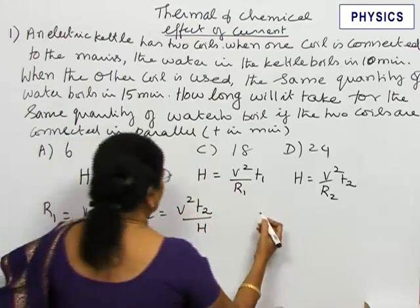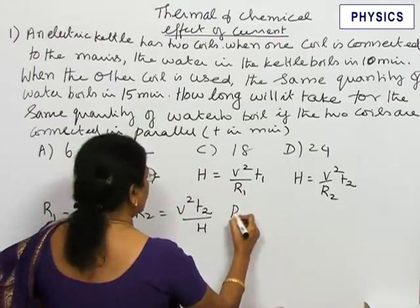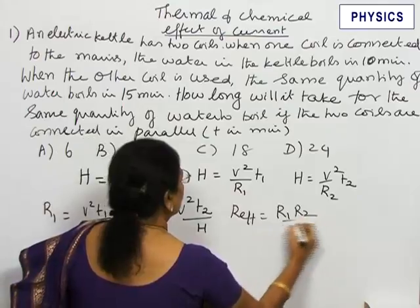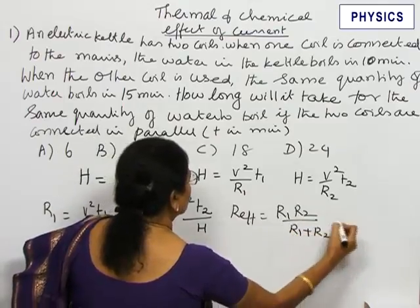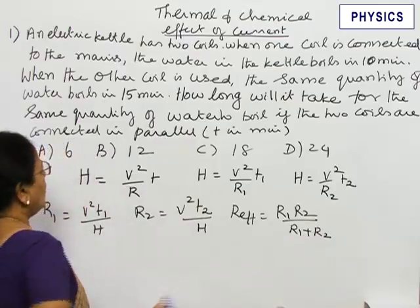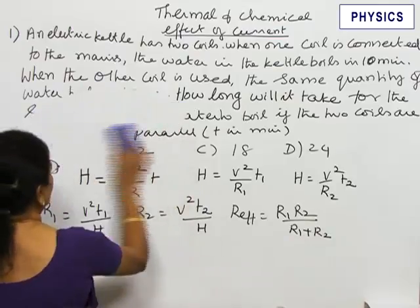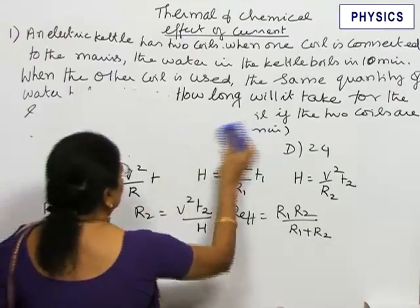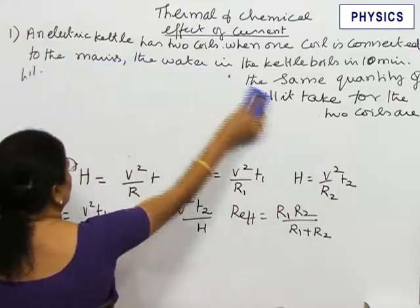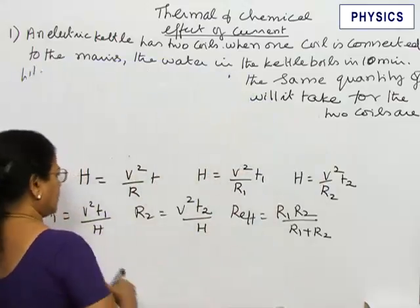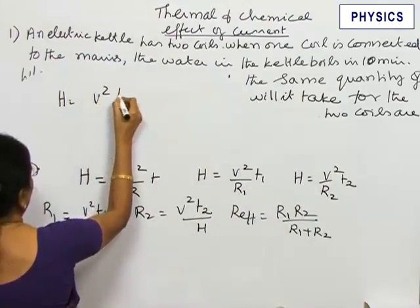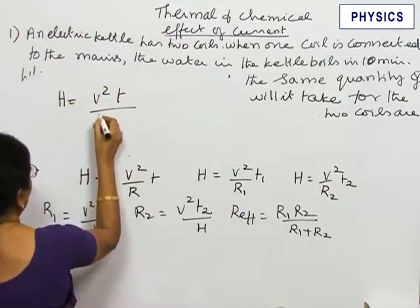When the two coils are connected in parallel, R effective will be R1 R2 by R1 plus R2. Now, how long is it going to take for the same quantity of water to boil? Therefore, we should have the same H. Let us take H equal to V square T by R effective.